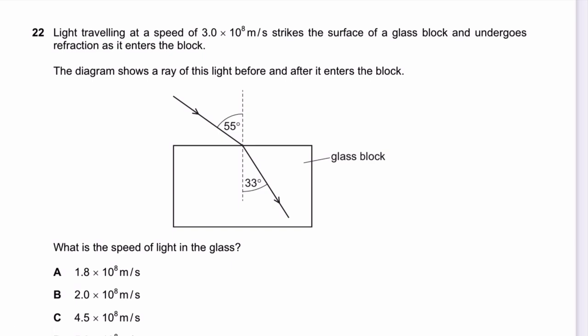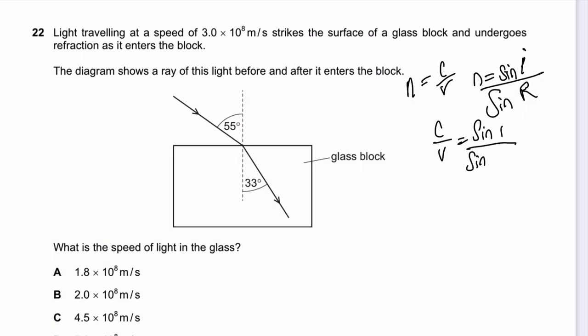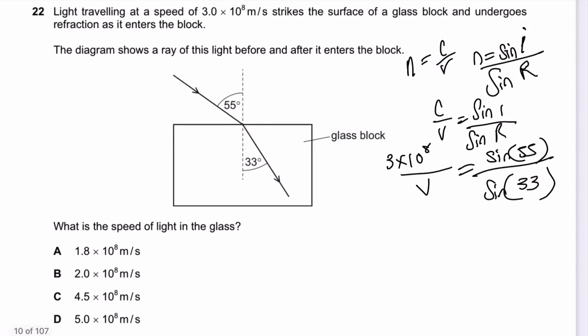Question 22: Light traveling at 3 × 10⁸ m/s strikes a glass block and undergoes refraction. What is the speed of light in the glass? Using n = c/v and n = sin i / sin r, we equate: c/v = sin i / sin r. So v = c × sin r / sin i = (3 × 10⁸) × sin 33° / sin 55°. The answer is B.